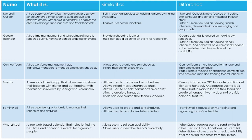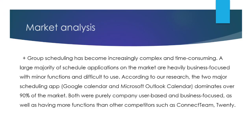The competitors we've researched mainly are Microsoft, Google, Connect Team 20, Family Wall, and When to Meet. Google and Microsoft's calendars are too complex. Based on user data we'll show in a moment, they require too much time — which is quite ironic, because as the technology develops, it probably takes increasingly more time to organize a schedule that's meant to help you save time. It doesn't really make sense, so we want to solve that problem.